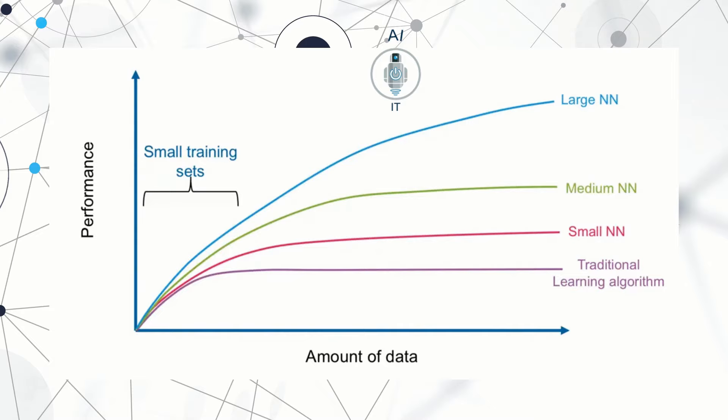As seen in the given figure, the larger the size of neural networks, the better is the performance. Whereas in traditional machine learning algorithms, they stop improving after a certain saturation point. We feed in a huge amount of data and get better performance with the help of neural networks.